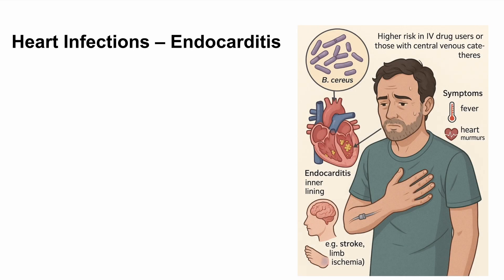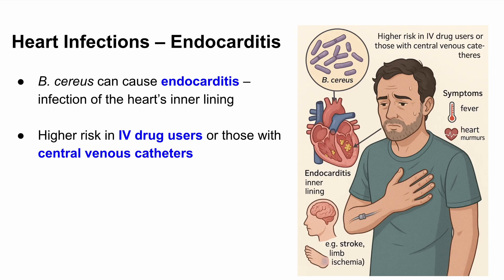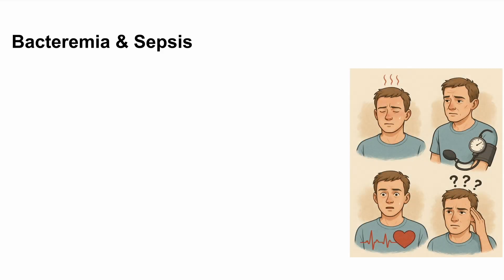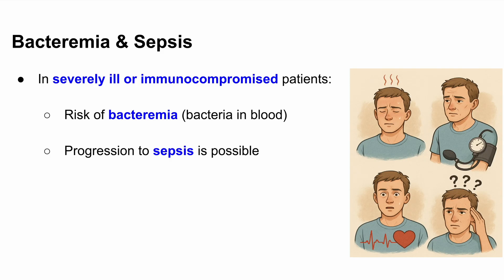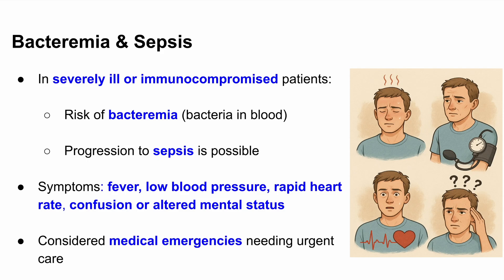We can also see endocarditis — an infection of the inner lining of the heart — especially in IV drug users or patients with central venous catheters. It presents with fever, heart murmurs, and signs of emboli like stroke or limb ischemia. Lastly, in severely ill or immunocompromised patients, bacteremia — bacteria in the bloodstream — or sepsis can occur, presenting with fever, low blood pressure, fast heart rate, and altered mental status.